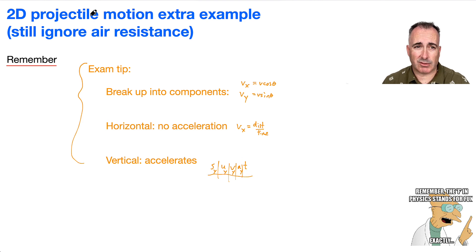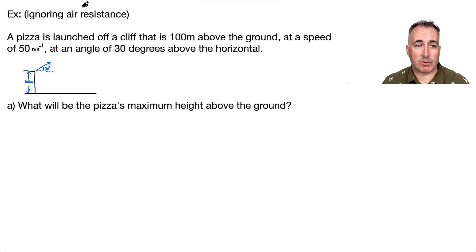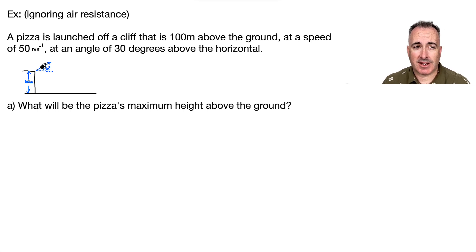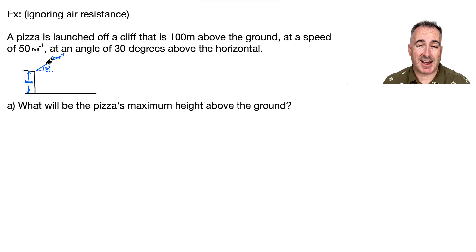Let's consider a situation where we have a pizza launched off a cliff that is 100 meters above the ground, launched at a speed of 50 meters per second. Keep in mind that 50 meters per second is the speed going up at that angle.